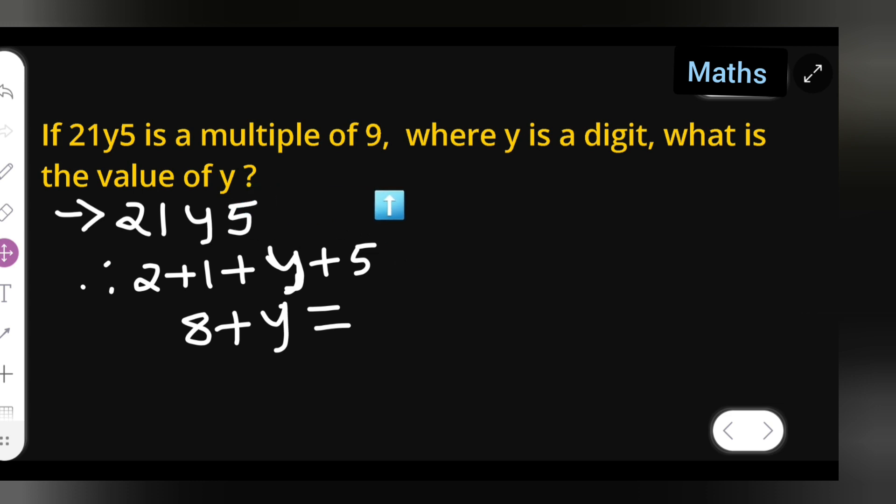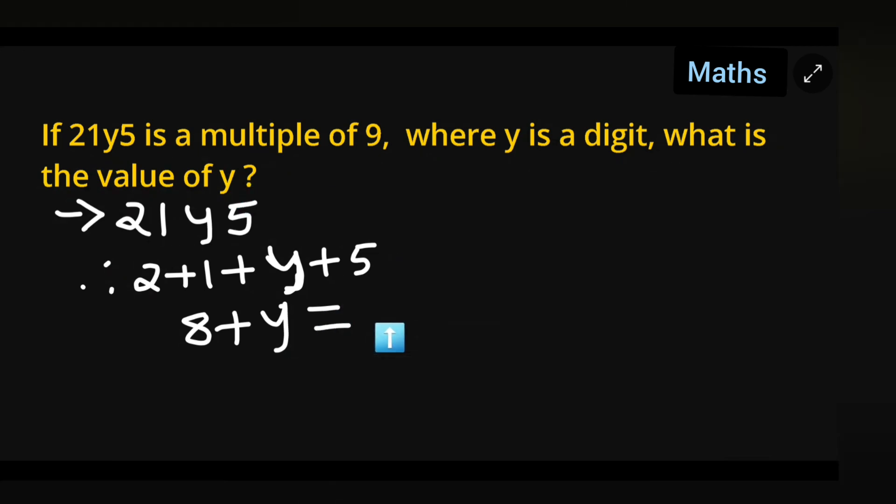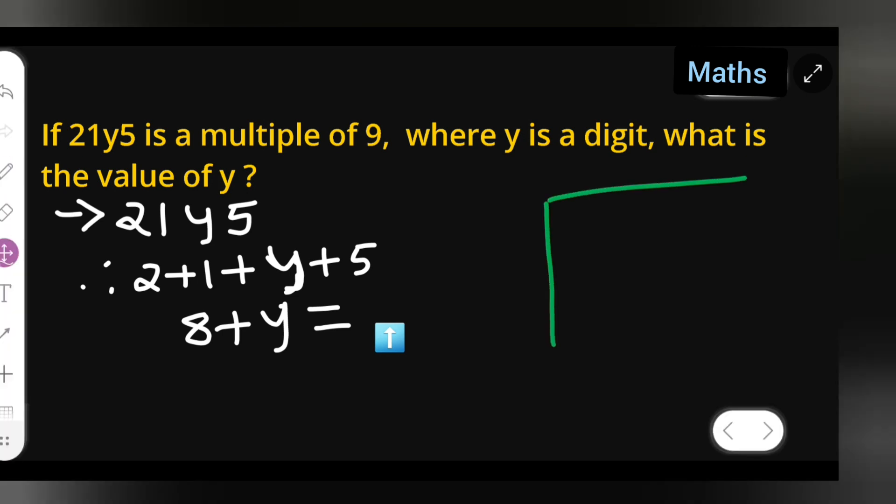Let me explain this part. The question says that 21y5 is a multiple of 9. Multiple of 9 means the table of 9: 9 times 1 is 9, 9 times 2 is 18, 9 times 3 is 27, 9 times 4 is 36, 9 times 5 is 45, 9 times 6 is 54, and so on.